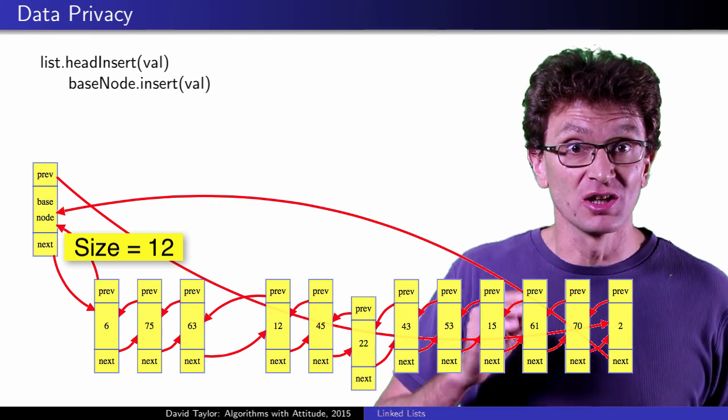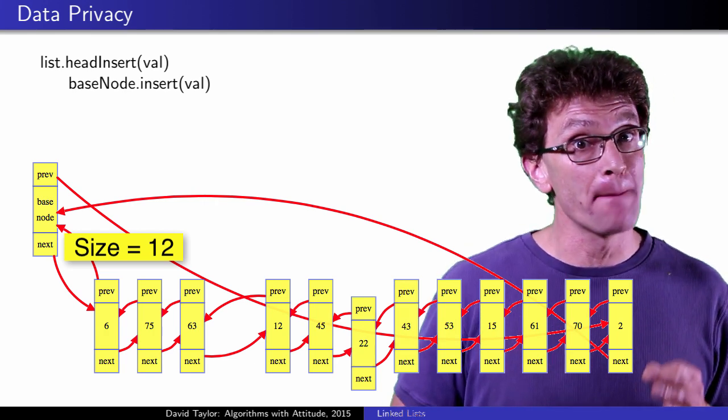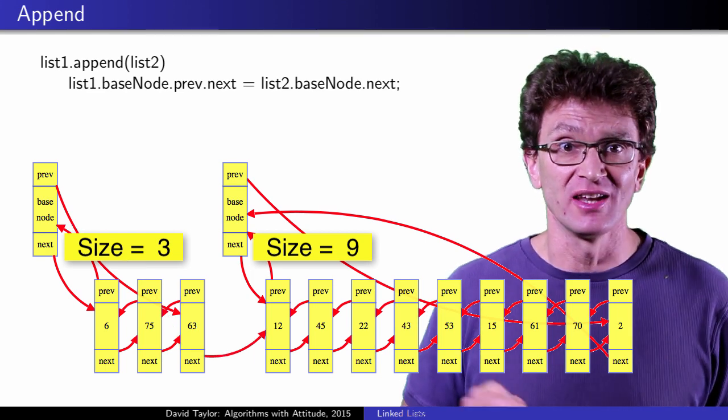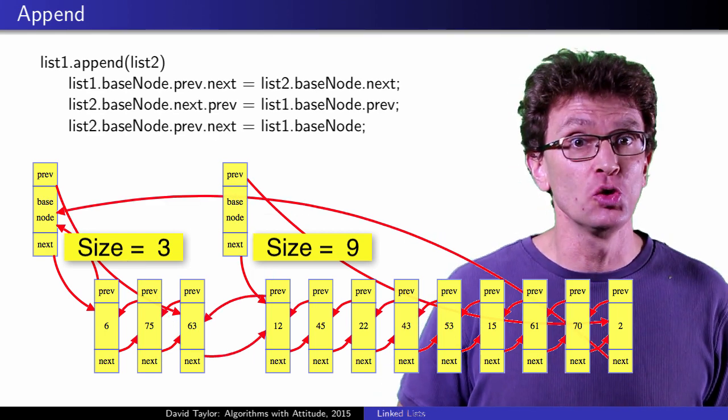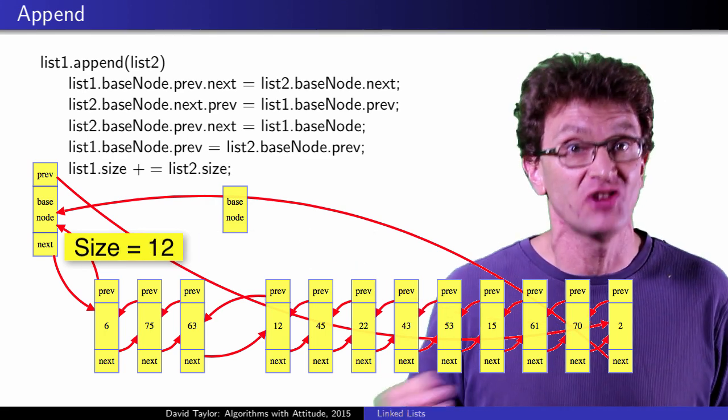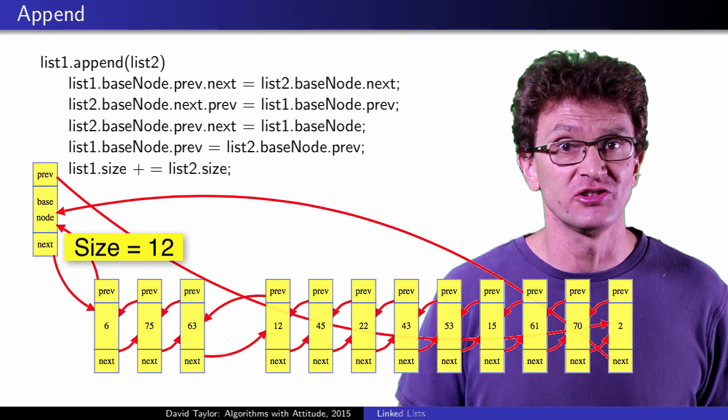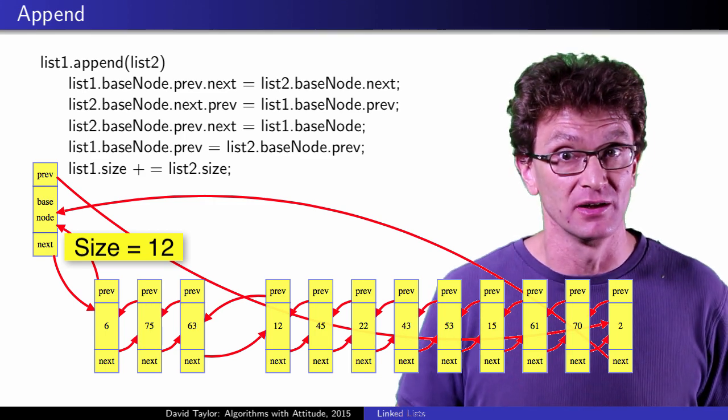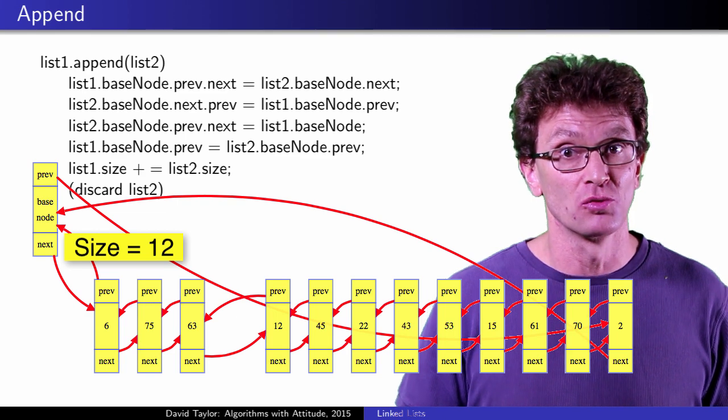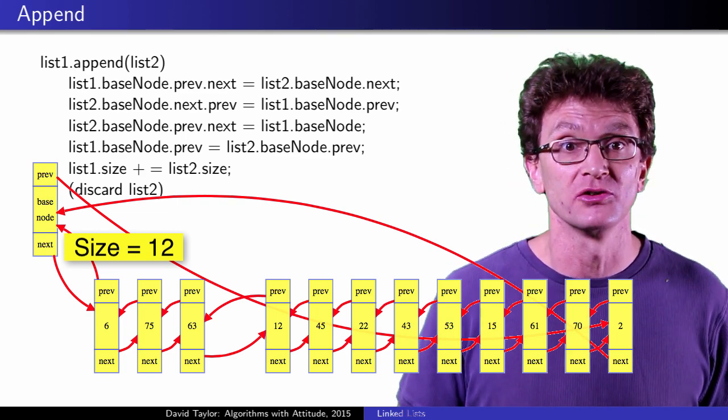There are less critical, but still constant time operations like appending one list to another. Stitch the tail of the first list and the head of the second list together, fix the references to and from the second list tail, and increase the size of the first list by the second list size. The first list now references the combined linked list, and the second list is destroyed. It takes constant time total, replacing the two original lists with one new list.